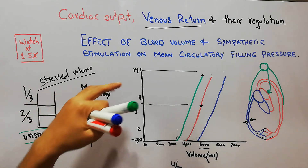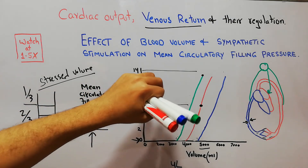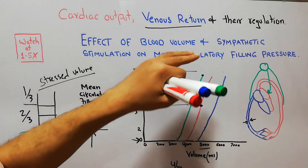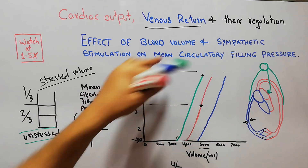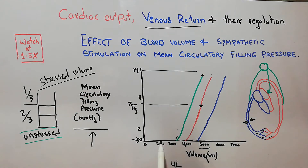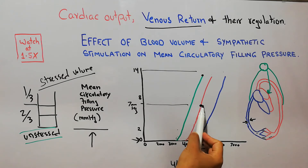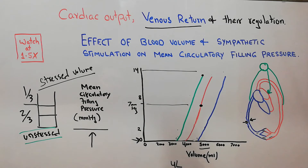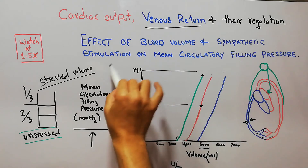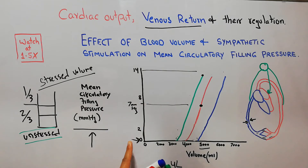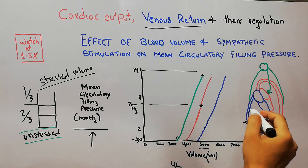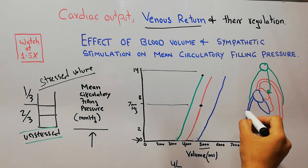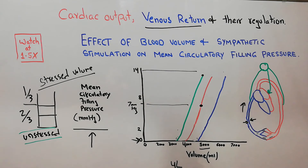In summary, increasing blood volume leads to an increase in mean circulatory filling pressure. Similarly, sympathetic stimulation leads to an increase in mean circulatory filling pressure. Both of these factors lead to an increase in venous return.